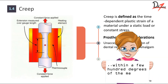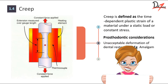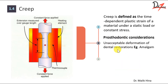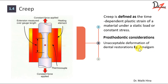Now how is creep important in prosthodontics? Because it can lead to unacceptable deformation of dental restorations. Example: amalgam. The thing with dental amalgam is that it begins to melt at temperatures only slightly above the room temperature. So when we have it in our mouth, it is actually in this kind of environment. So when patients who have amalgam restoration eat something hot and clench their teeth in order to chew, in those cases the amalgam can undergo creep.